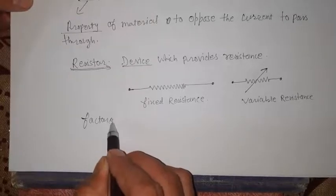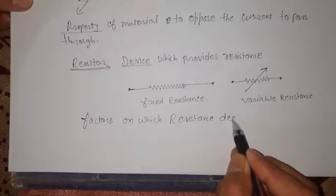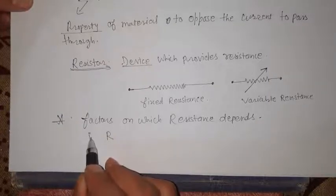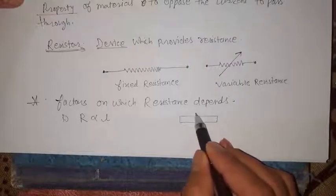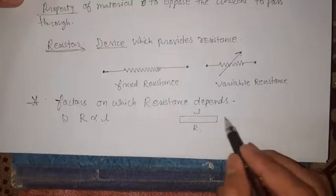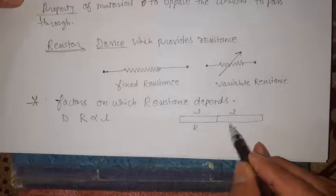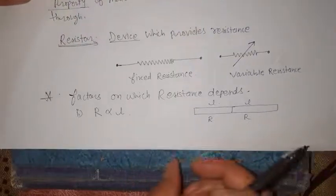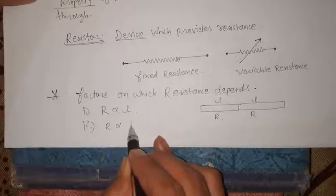Now let us discuss the factors on which resistance depends. First, resistance is directly proportional to the length of the conductor. If I double the length, the resistance also doubles. If I reduce the length to half, the resistance also decreases. Second, resistance is inversely proportional to the area of cross-section.